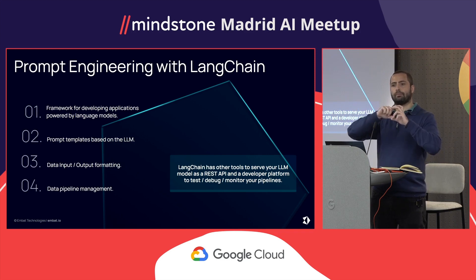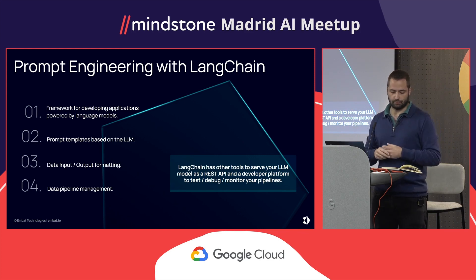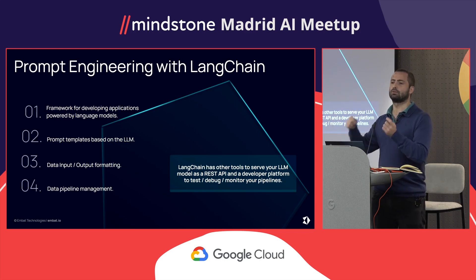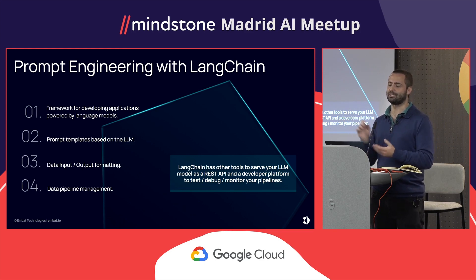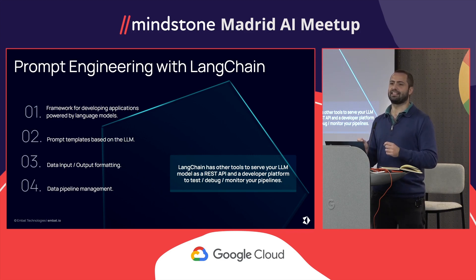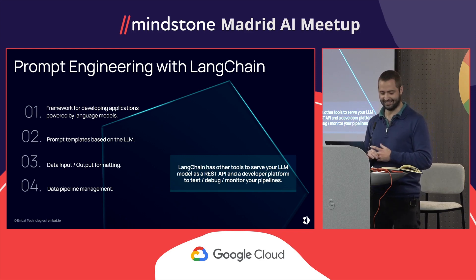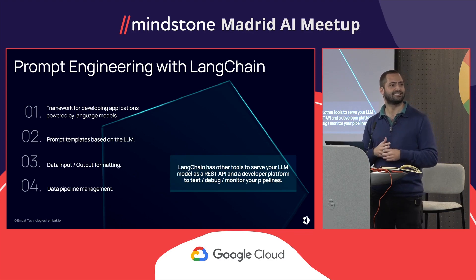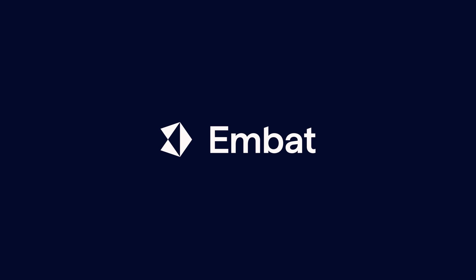LangChain also has tools to manage your data pipeline — calling different models, fetching data from your database, and storing results elsewhere. This is basically how we productized the solution and achieved a 50% improvement in automated accounting. LangChain also has tools to serve the solution as a REST API, though we don't use that part. When we started working with it, they had just the template and data I/O features; now it's grown into a much larger ecosystem. Thank you very much — we have five minutes for Q&A.